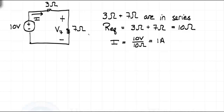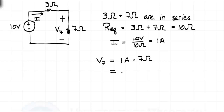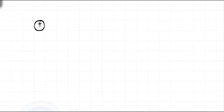If we wanted to determine the voltage across, say, this 7-ohm resistor by Ohm's law, the voltage across the 7-ohm resistor is that current of 1 amp times 7 ohms, which results in 7 volts. While that was a simple analysis, we might be able to apply this more broadly by recognizing a pattern.